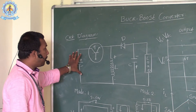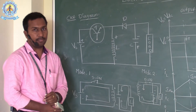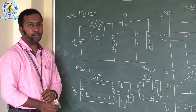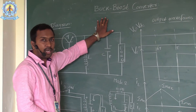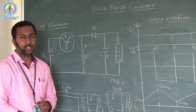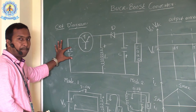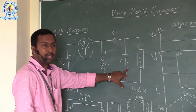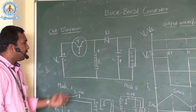Now let us see the operation of the buck boost converter with the help of modes of operation. We have two different modes of operation. The other name for the buck boost converter is called the inverting regulator. This means if you see the circuit diagram, the input terminals are plus and minus, but if you see the output, the terminals are in the opposite polarity. That's why the buck boost converter is also called an inverting regulator.